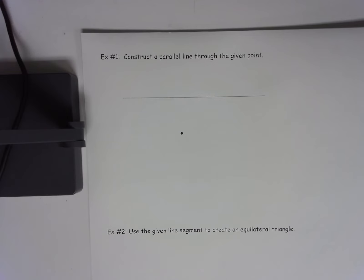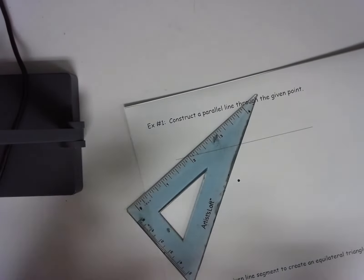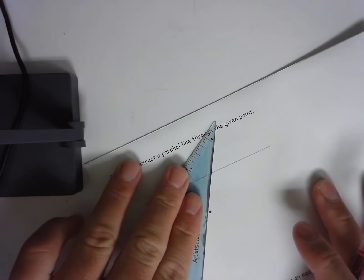Okay, so today we are going to construct a line that's parallel to another line through a given point. First thing you want to do is actually draw in the transversal. So you take a straight edge, and in this case I'm going to use a pen but you could use a pencil, and you draw through that point a straight line.